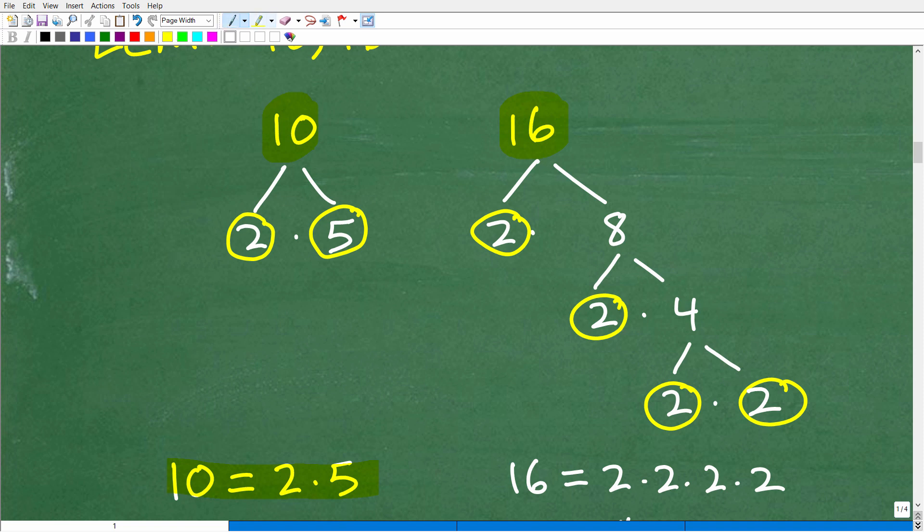And then 16, you could just start breaking this up this way. Two times eight. You circle your prime factors as you go. So two is prime. Eight is not prime. I can keep breaking this up. So that's two times four. So two is prime. So I can keep going. Four is the same thing as two times two. So 16 is equivalent to two times two times two times two. All these twos here is what? Well, I can write that as two to the fourth. And 10 is the same thing as two times five.